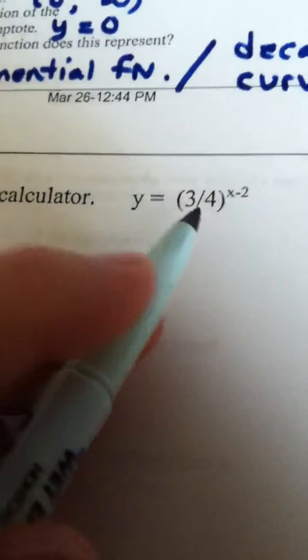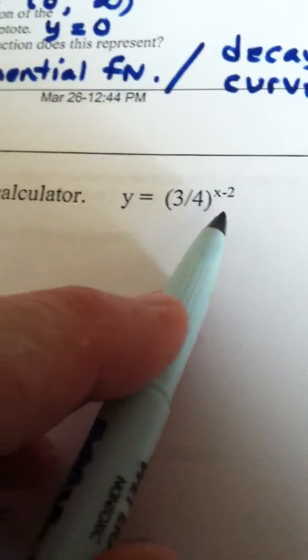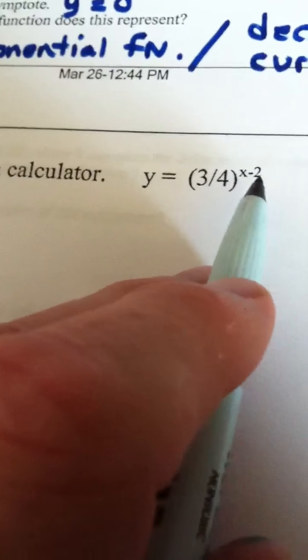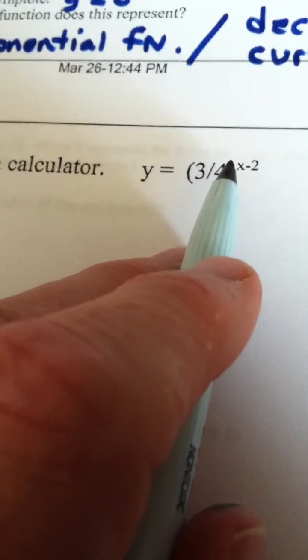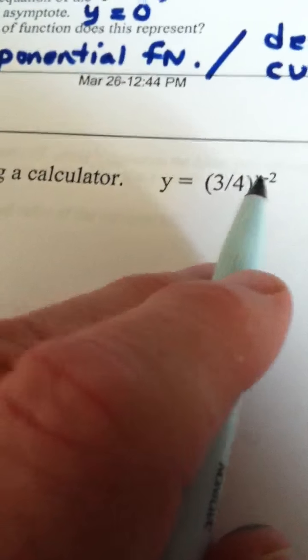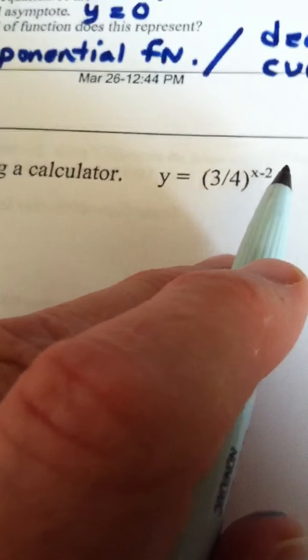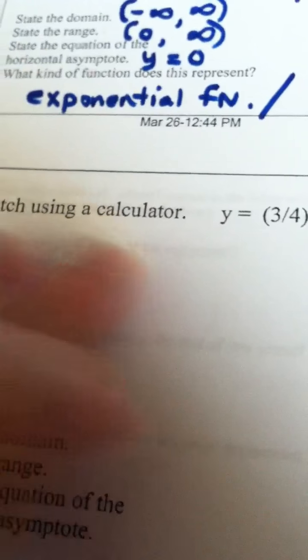Now, this is basically an exponential function that's been shifted. 3 fourths to the x fits the definition of exponential, and the minus 2 shifts it to the right 2. But what's kind of neat here is we're allowed to use the calculator, so let's do this.